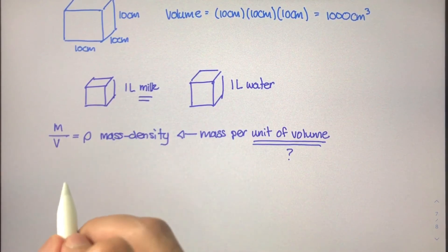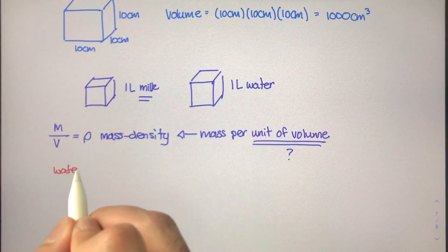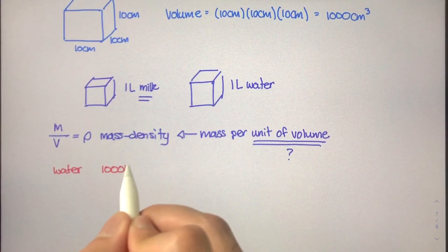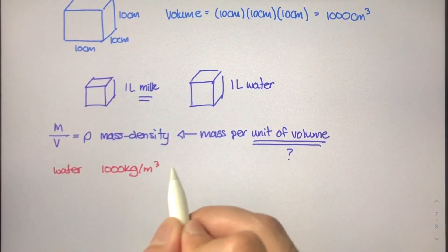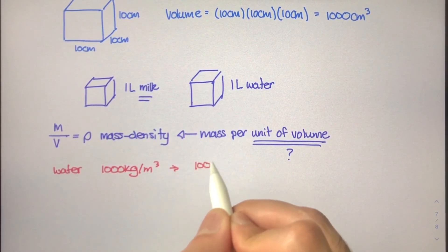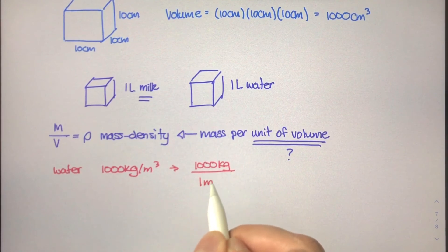If we just took a look at water, water has generally a mass density of 1000 kilograms per meter cubed. Or if I rewrote this, this would be 1000 kilograms of mass per one cubic meter of space.